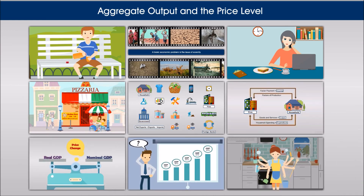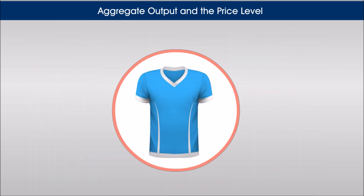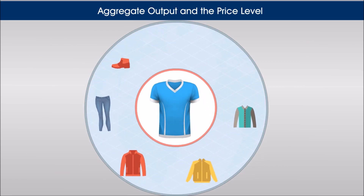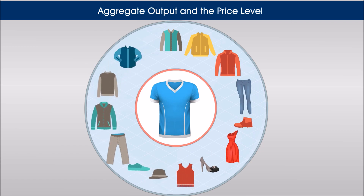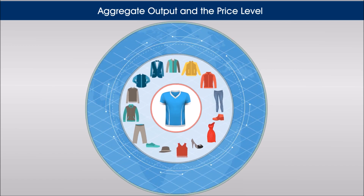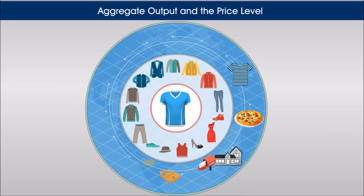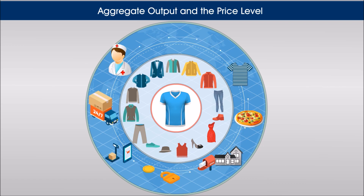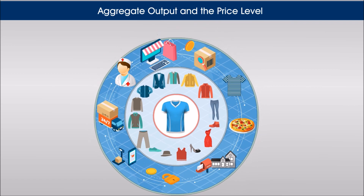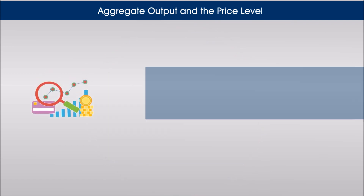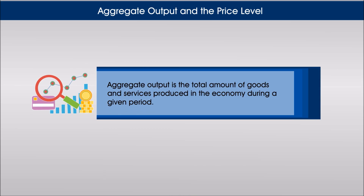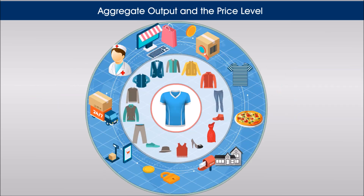The economy is so complex that we need to simplify matters by isolating the important relationships. Imagine a t-shirt, then imagine clothes more generally — clothes include not just a t-shirt but thousands of other items. Now make the leap from clothes to all goods and services produced in the economy: clothing, food, housing, entertainment, transportation, medical care and so on. Economists call this aggregate output, since aggregate means total.